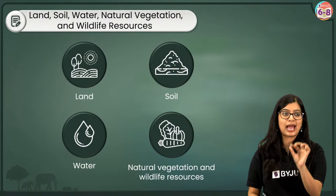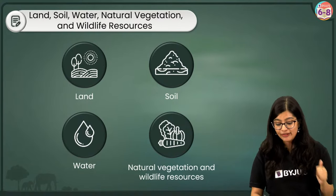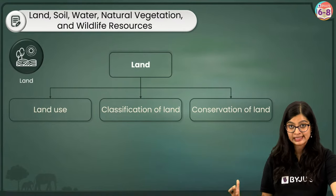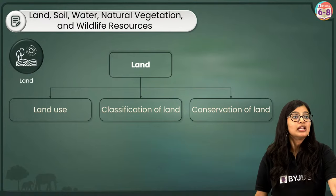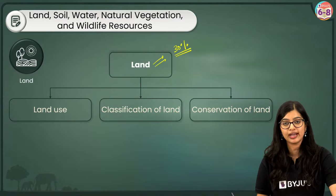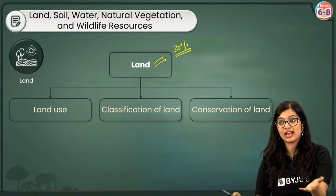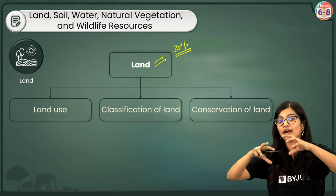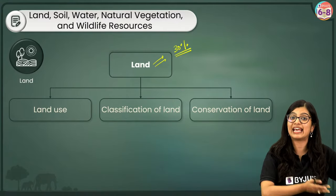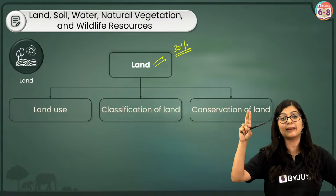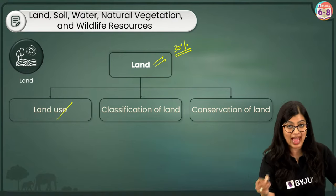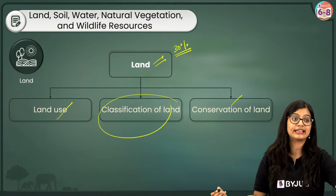Let me do a quick recap. The first topic was land as a resource. We know that 30 percent of the earth is land — specifically the area above water. The 30 percent is not covered by water while 70 percent is. We then learnt about how land is used, how land can be classified, and we learnt about land degradation and conservation.